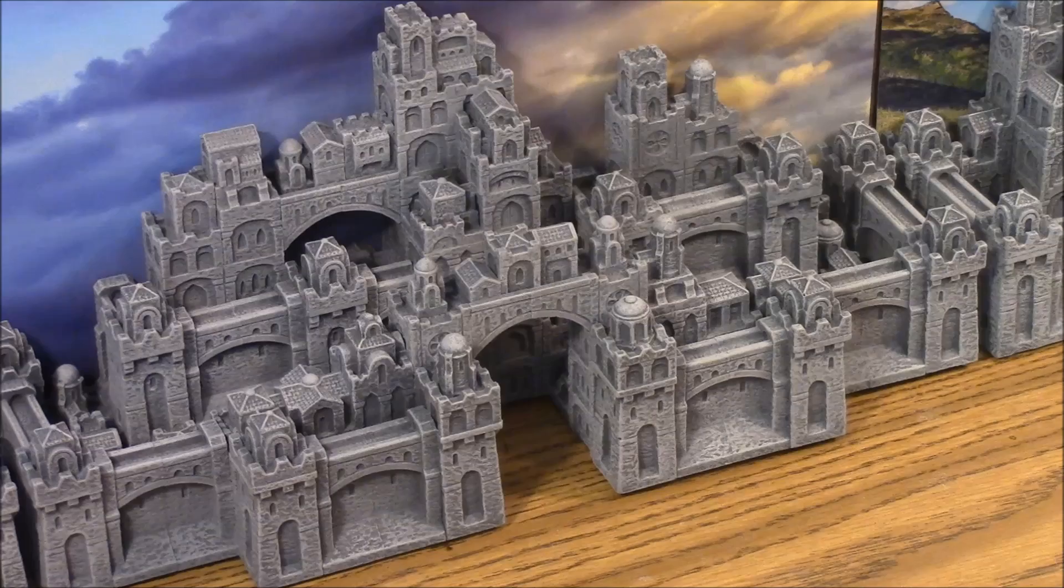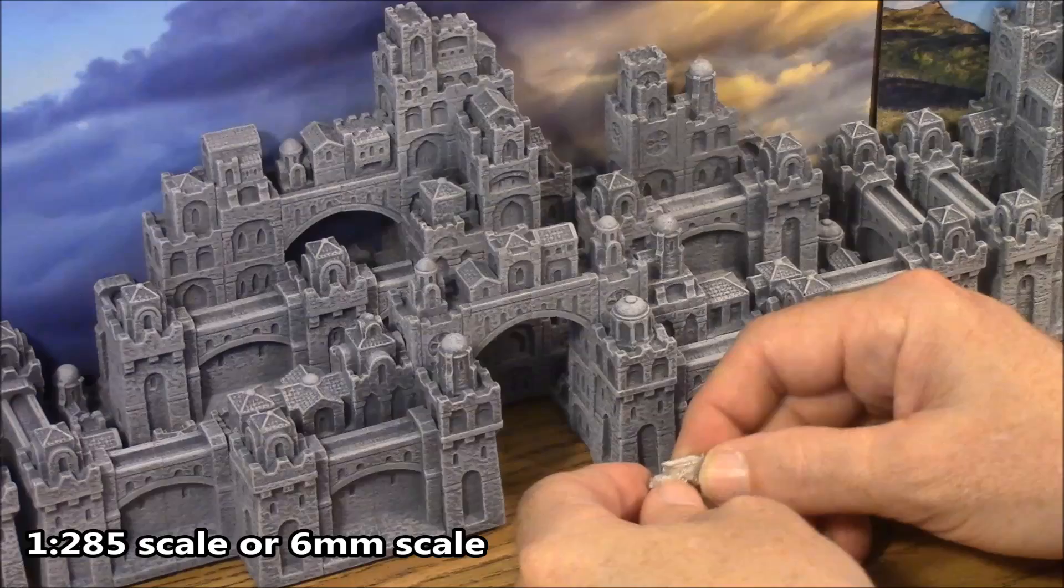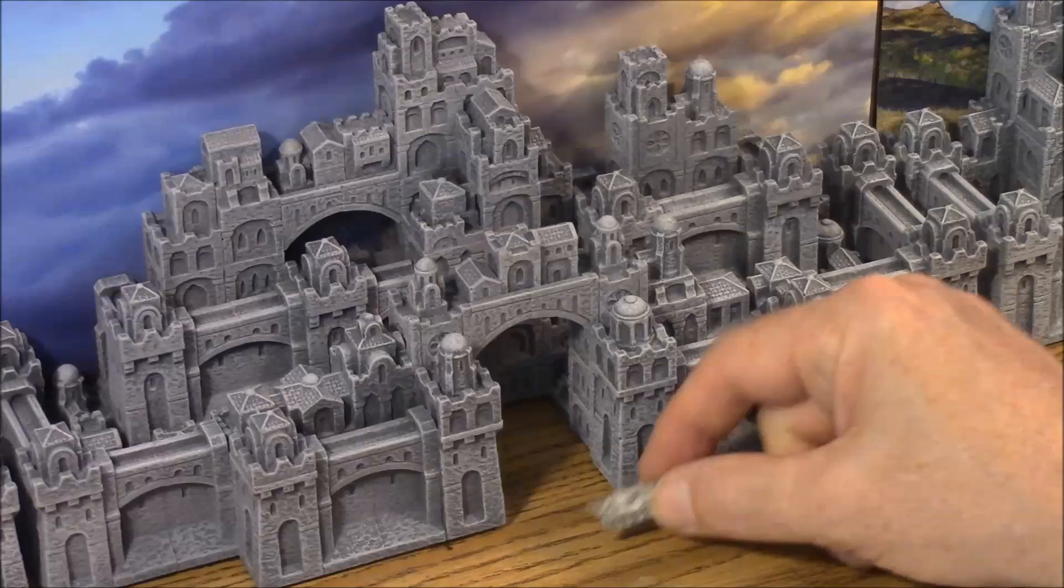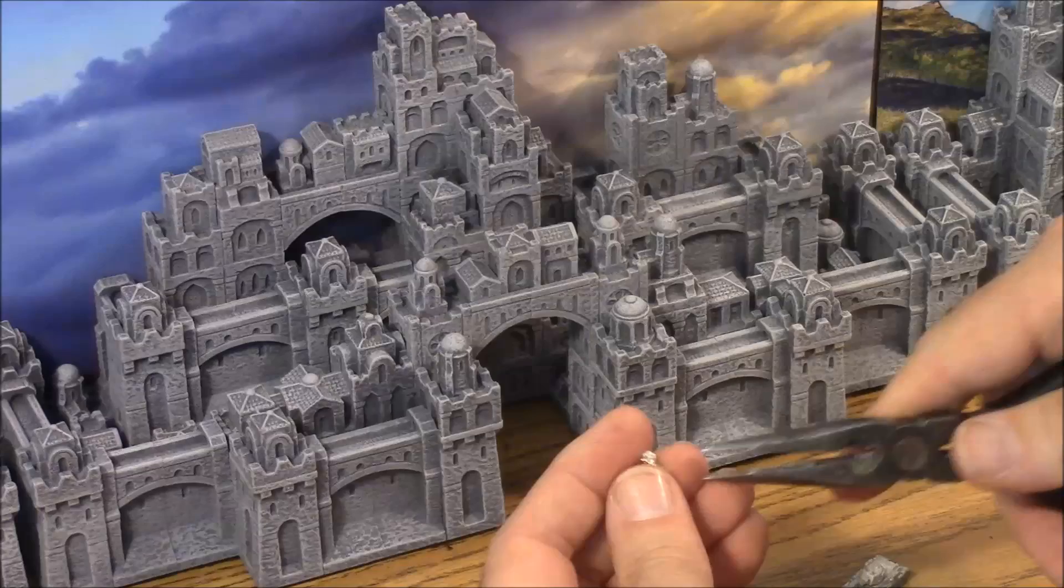Now I want to give you some idea what the scale of these buildings are. The miniatures I have here are 1-285 or 6mm scale. This is actually the size that a truck would be here. This here is a 6mm tank, so this is what the size of a tank would be.